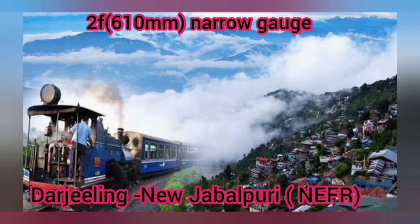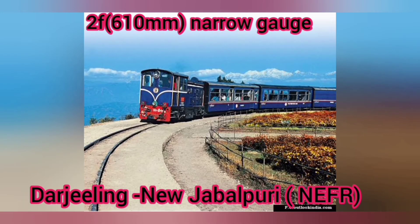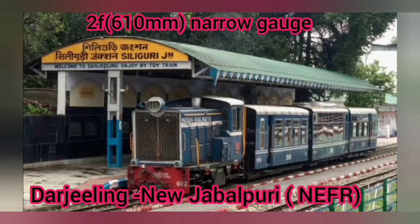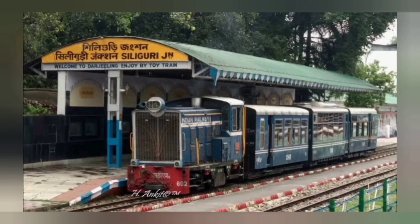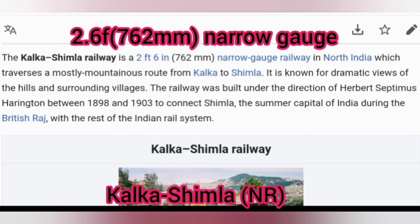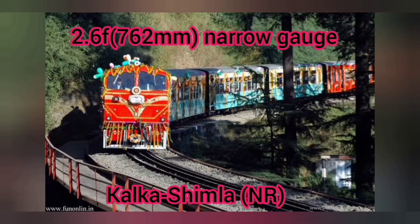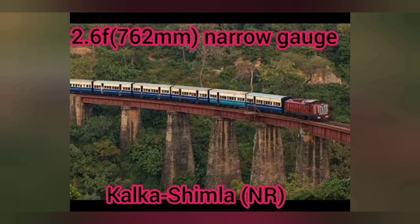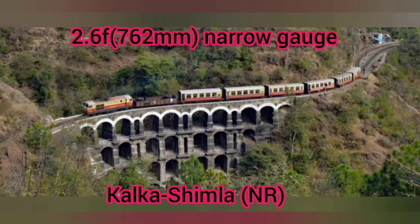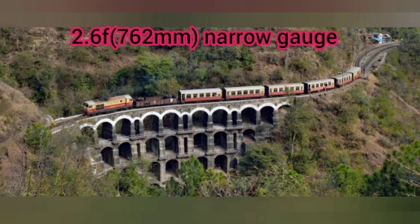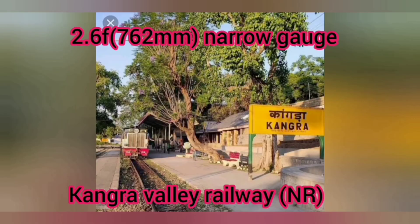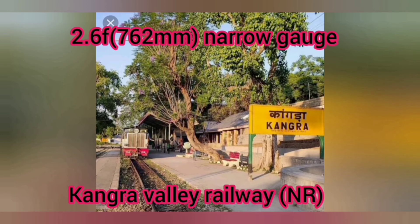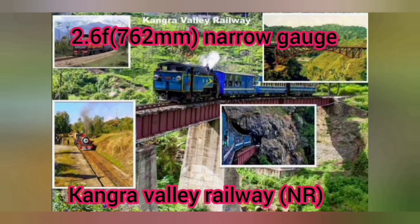Which is operated by North East Frontier Railway. Next, 2.6 feet, 762 mm narrow gauges are operated by Northern Railway. There are two routes available. One is Kalka to Shimla and another one is Kangra Valley Railway, which is about 164 km. These two routes are operated by Northern Railway only.